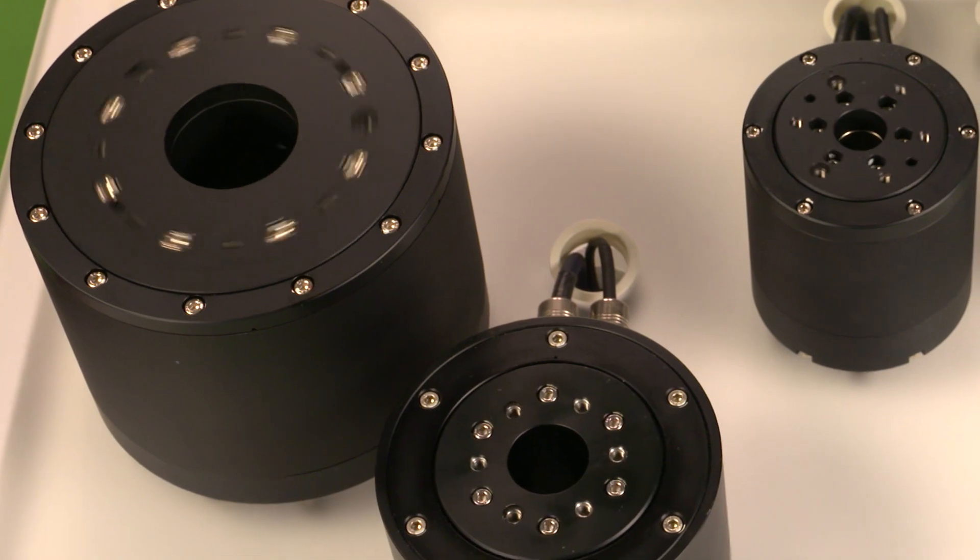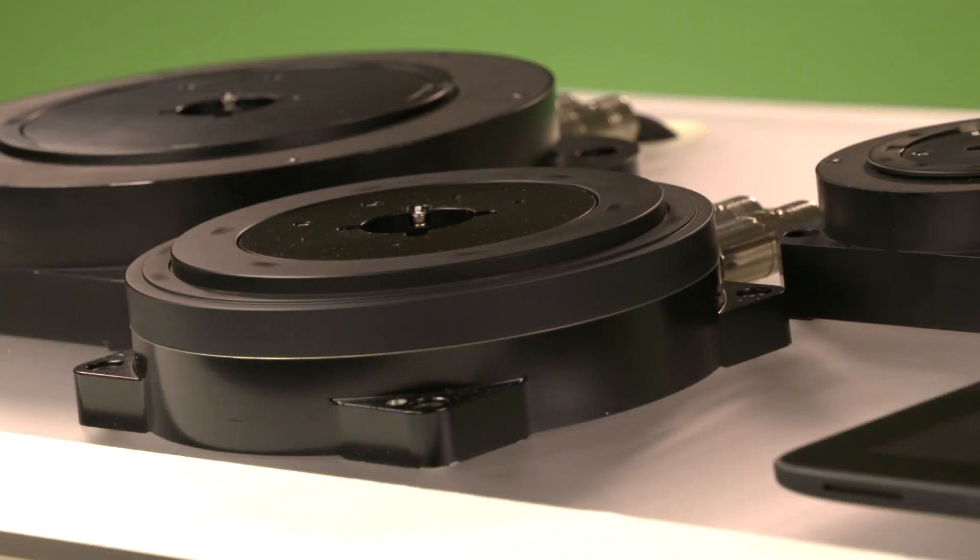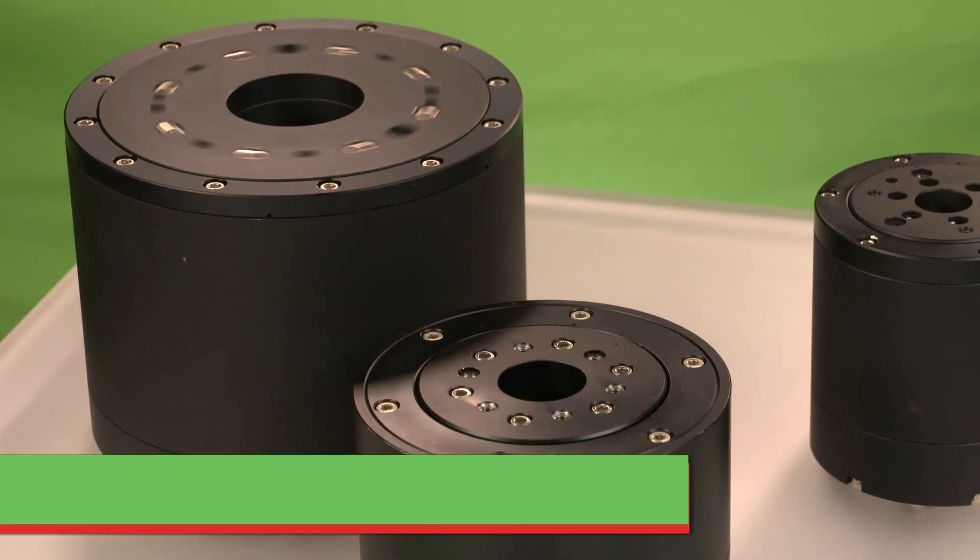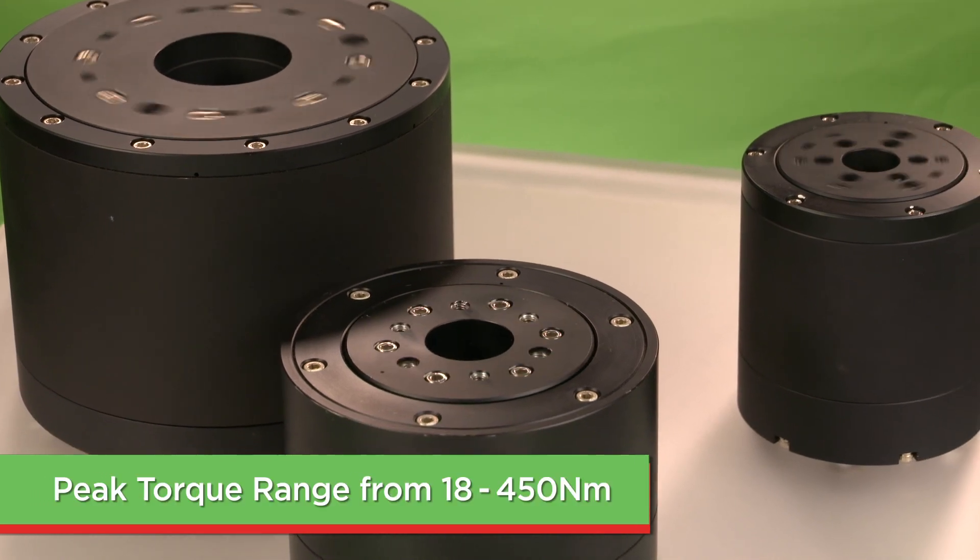Hiwin offers both internal and external rotation direct drive motors in a wide choice of profiles and peak torque range from 18 to 450 Newton meters.